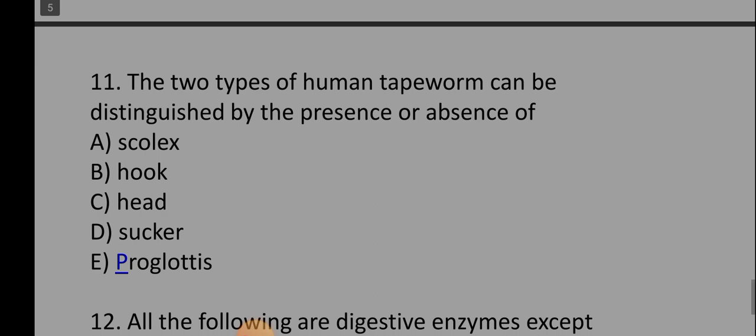Number 11 says, the two types of human tapeworm can be distinguished by the presence or absence of: A) Scolex, B) Hooks, C) Head, D) Sucker, E) Proglottis. So the correct option is option B, which is hooks.